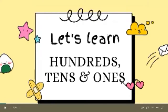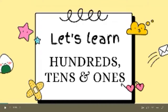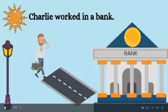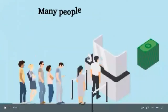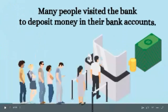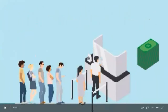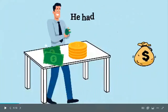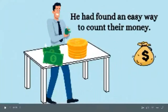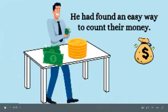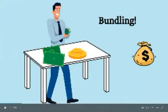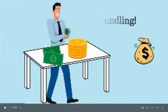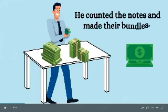Let's learn hundreds, tens, and ones. Charlie worked in a bank. Many people visited the bank to deposit money in their bank accounts. Charlie counted their money and deposited it in their accounts. He found an easy way to count money — bundling. He counted the notes and made bundles.